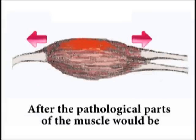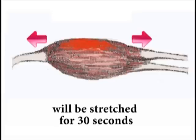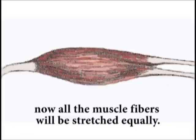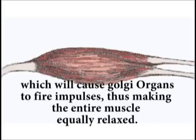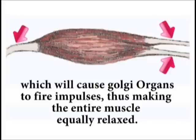After the pathological part of the muscle has been stretched for 30 seconds, all the muscle fibers will be stretched equally. At this time, we need to apply post-isometric stretching techniques, which will cause the Golgi tendon organ to fire an impulse, thus making all the muscle fibers equally relaxed.